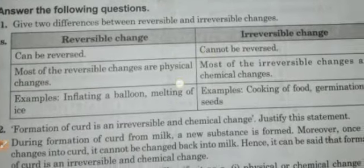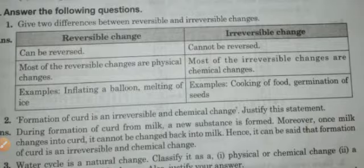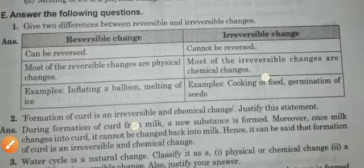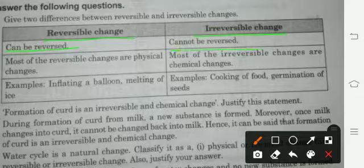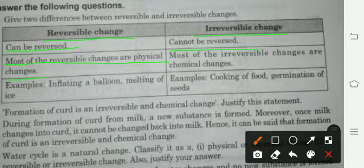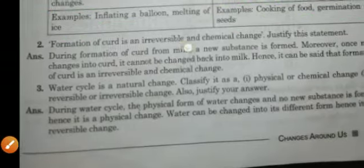Now Part E question answers. First question: give the difference between reversible and irreversible change. Reversible change can be reversed; irreversible change cannot be reversed. Most reversible changes are physical changes — examples: inflating of balloons, melting of ice. Most irreversible changes are chemical changes — a new substance is formed — like cooking of food, germination of seeds. These are irreversible as well as chemical changes.